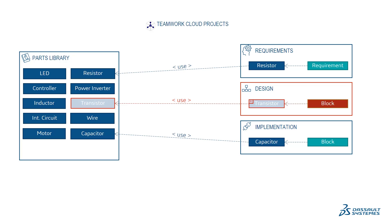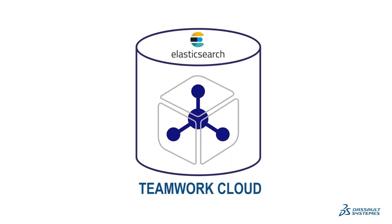The Global Element Usage Indexing and Search feature solves this issue by allowing you to keep track of element usages across the specified Teamwork Cloud repository scope. To enable this feature, the Teamwork Cloud server must have the Elasticsearch engine installed and configured.